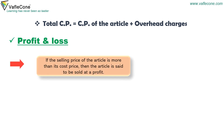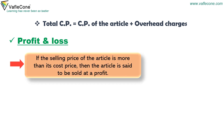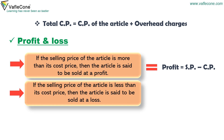If the selling price of the article is more than its cost price, the article is said to be sold at a profit. Profit equals selling price minus cost price. If the selling price is less than its cost price, the article is said to be sold at a loss. Loss equals cost price minus selling price.